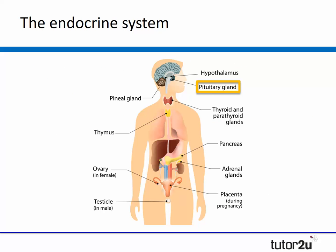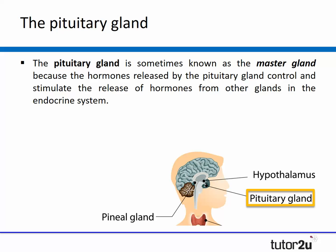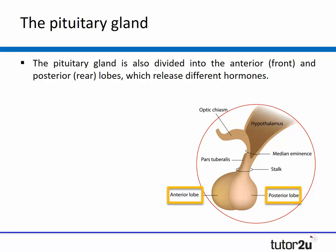Now let's look more closely at the pituitary gland. The pituitary gland is sometimes known as the master gland because the hormones released by the pituitary gland actually control and stimulate the release of hormones from other glands in the endocrine system. For example, the pituitary gland may send a signal to the adrenal glands to stimulate the release of adrenaline. The pituitary gland is also divided into two sections — the anterior, which means front, and the posterior, which means rear lobes, as you can see from the picture on screen now.